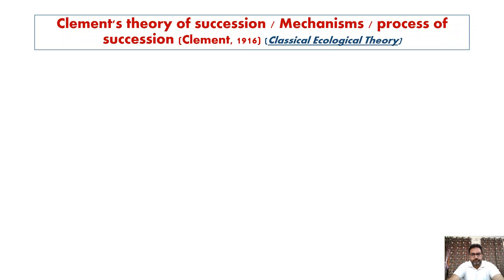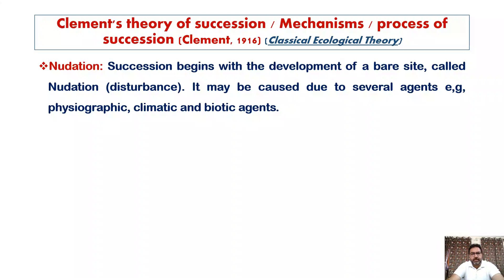One of the important workers who worked on ecological succession put forth the classical ecological theory. That scientist is Clements. Clements, in 1916, put forth the classical ecological theory wherein he described the general process of ecological succession.